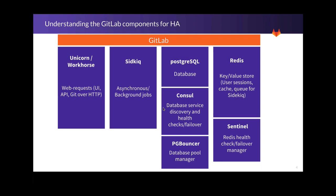Earlier I mentioned scaling high-resource services to prevent issues under load. This slide gives you a look under the hood of GitLab's modular setup and the discrete services that are commonly scaled in an HA setup. For example, if you make heavy use of the API or cloning large repositories often, you may want to break out the Sidekiq job service to a dedicated node.